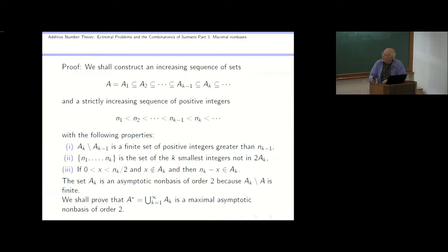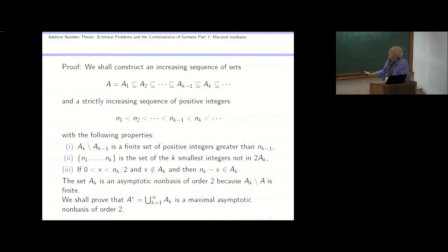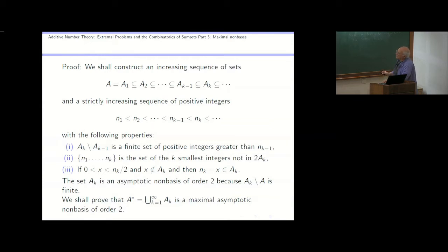To give a flavor of how some of these results are proved: we're going to construct an increasing sequence of sets, and also a strictly increasing sequence of integers with the following properties. You get from one set to the next always by adding just a finite set, so every set in this sequence is an asymptotic non-basis. Every element added — what you add to A_{k-1} to get A_k — will be a finite set of positive integers bigger than N_{k-1}. The numbers N_1 up to N_k are the k smallest integers not in the sum set 2A_k.